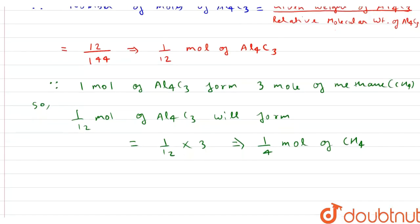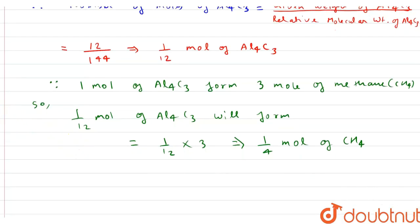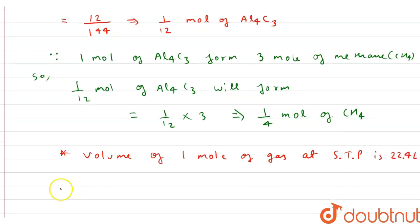Now, volume of 1 mole of gas at STP is 22.4 liter. Therefore, volume of 1 by 4 mol of CH4, that is methane gas, at STP will be